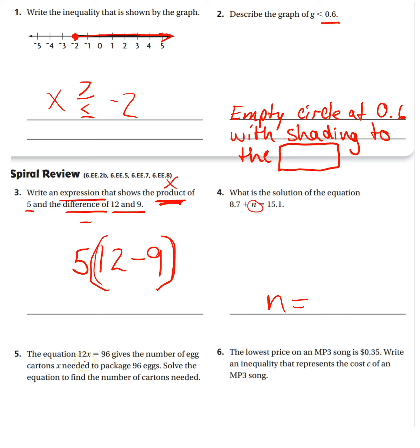Number five, the equation 12x, which means 12 times x equals 96, gives the number of egg cartons x needed to package 96 eggs, solve the equation.